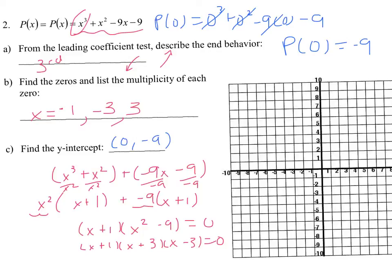Plot the zeros at negative 3, negative 1, and positive 3, and the Y intercept at negative 9. Sketch the end behavior from step 1: it falls to the left and rises to the right, crossing through all the points. Come from the left side up, turn back down and pass through negative 1, go down through the Y intercept at negative 9, and finish the graph. That's the shape you should have for that polynomial function.